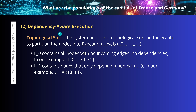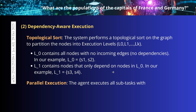Then comes the real innovation: topological sorting. You sort the graph to partition the nodes into execution levels — level 0, level 1, up to level K. Level 0 contains all nodes with no incoming edges, meaning no dependencies — in our example, S1 and S2. The next level contains nodes that only depend on nodes in the first level — in our example, S3 and S4. With this topological sorting, the agent executes all subtasks within a single level in a parallel batch. We have found a solution — let's go with maximum speed.